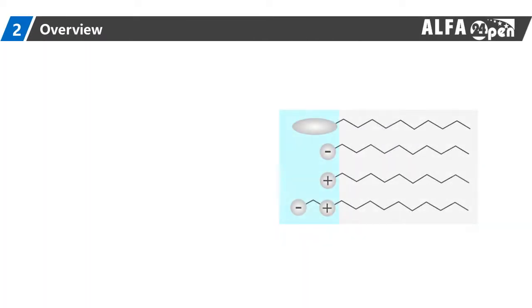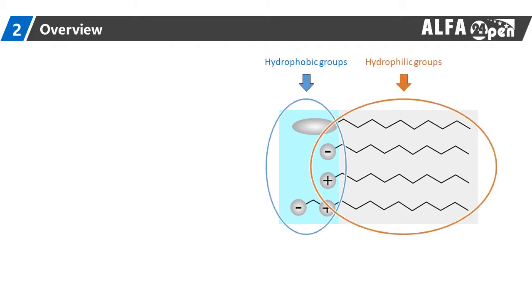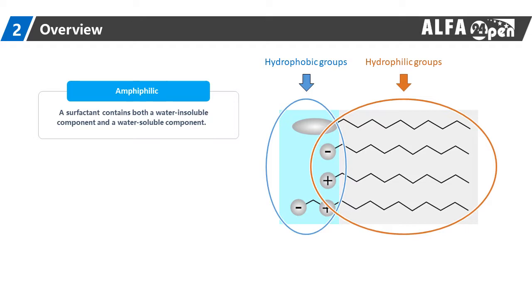Surfactants are usually organic compounds that are amphiphilic, meaning they contain both hydrophobic groups and hydrophilic groups. Therefore, a surfactant contains both a water-insoluble component and a water-soluble component.